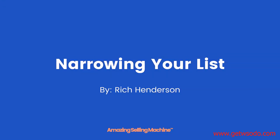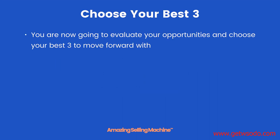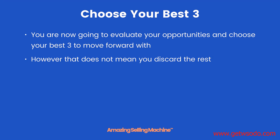In this lesson you're going to narrow down your list of hot opportunities to just three. You will then take those three hot opportunities into module two where Mike will be showing you how to find and contact suppliers. You are now going to evaluate your opportunities and choose your best three to move forward with — however that does not mean you discard the rest, as they might well be future products for you.